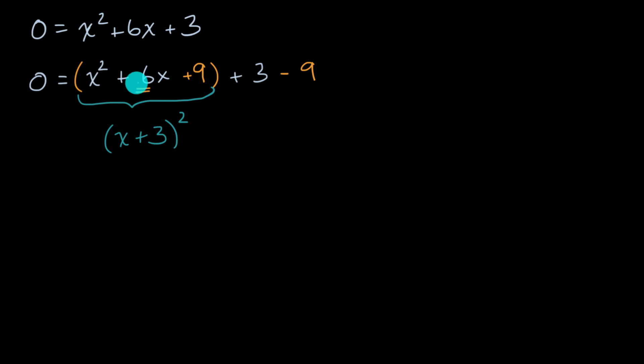We said, all right, we're gonna be dealing with a three, because three is half of six. And if we squared three, we get a nine there. And then this second part right over here, three minus nine, that's equal to negative six. So we could write it like this: zero is equal to x plus three squared minus six.